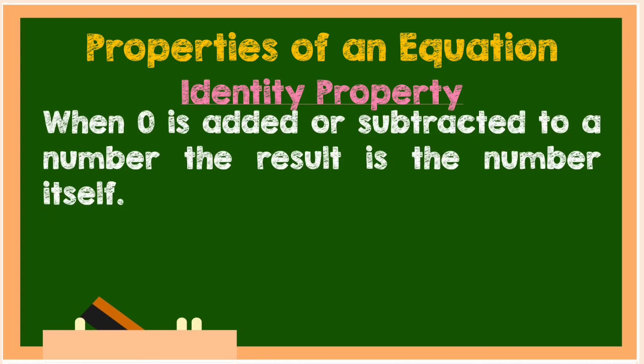Next is the identity property. When 0 is added or subtracted from a number, the result is the number itself. For example, 24 plus 0 is equal to 24. 27 minus 0 is equal to 27.